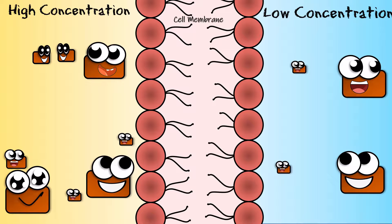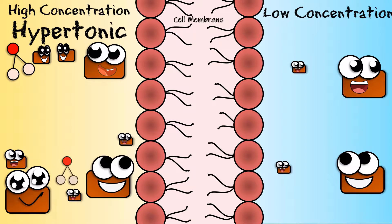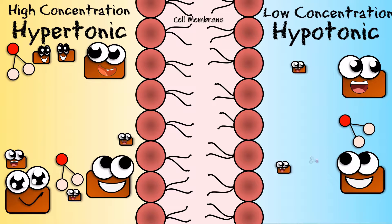At high concentration or hypertonic conditions, the cell has more number of solutes and less number of water molecules. However, the external environment has low concentration of solutes, i.e. hypotonic, and more number of water molecules.